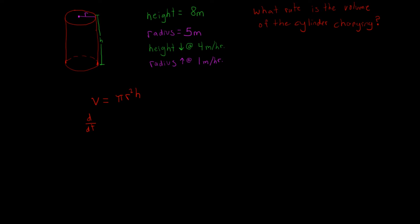So we're taking the derivative with respect to time of the left side, and then we're taking the derivative with respect to time of the right side, which is pi r squared times height. The left side is pretty obvious — it's just going to be the derivative of volume with respect to time, which is what we're solving for.